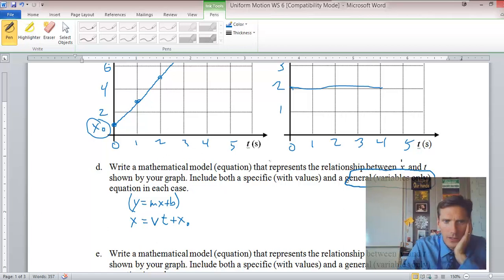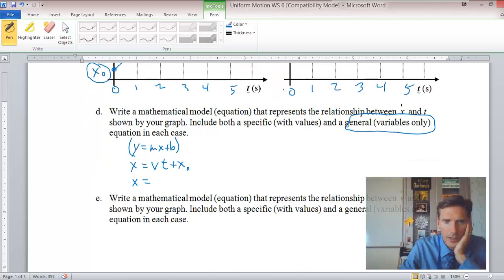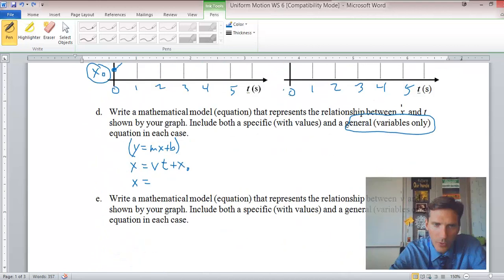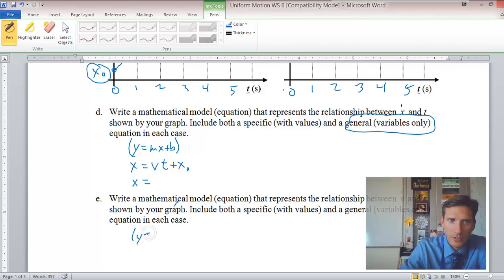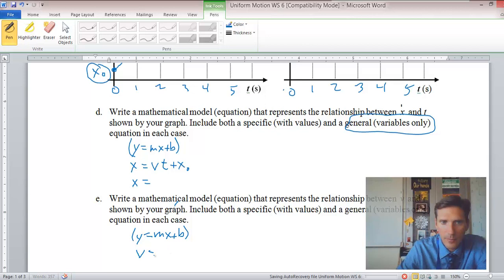So it's a similar process for E, where we're writing a mathematical equation to represent the relationship between velocity and time. And just to get you started on this a little bit, we can see that we are again going to use the general equation for a line. So it's going to be Y equals MX plus B. And in this case, our Y is our V, and X is our T. And the B intercept would be V naught, V at time zero. And what does the slope of a velocity versus time represent? It represents acceleration. So let's put acceleration in there.